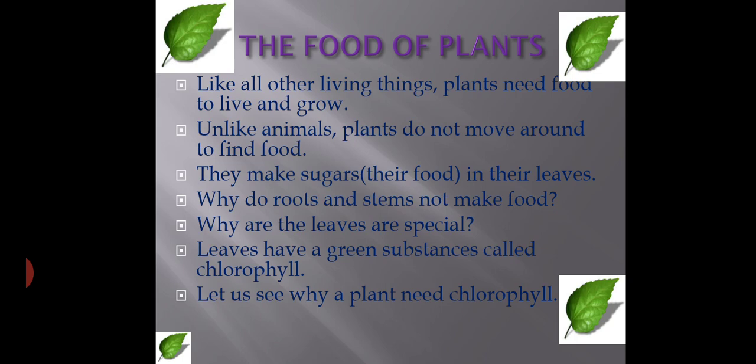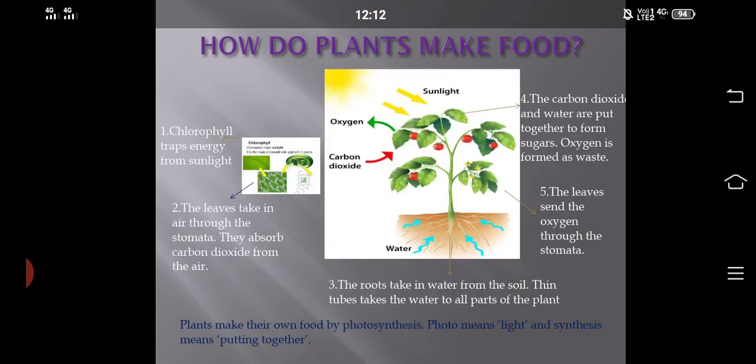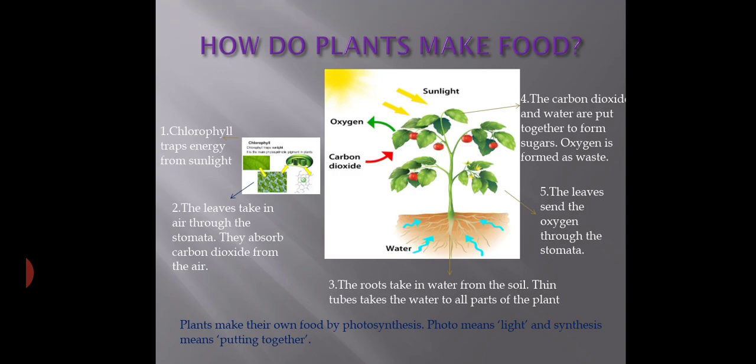Leaves are green because of a substance called chlorophyll. Chlorophyll is important for the preparation of food through photosynthesis. Now let us see how plants make their own food. Plants make their own food by photosynthesis — 'photo' means light, and 'synthesize' means putting together.